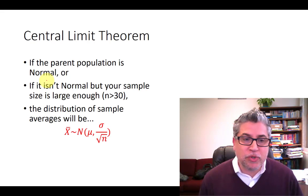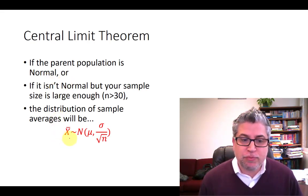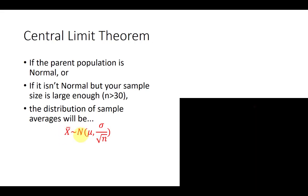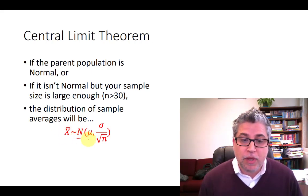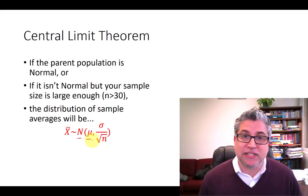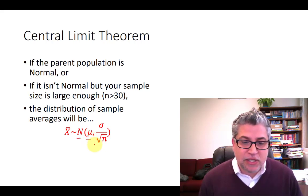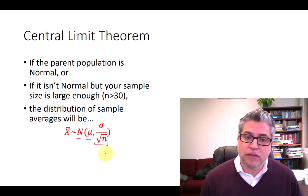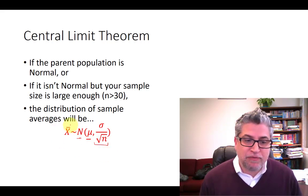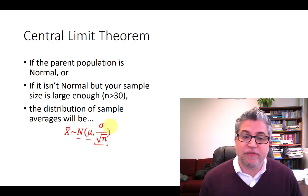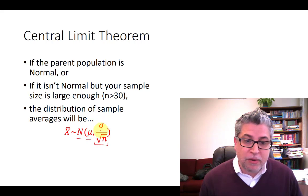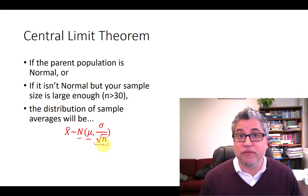Now the central limit theorem goes actually even a little bit farther. Not only does it say that the distribution of all the possible sample averages will be normal, but that it will be an unbiased estimate of the true population mean, and that it's going to be a pretty precise estimate. The range of possible values of sample averages you might get is going to have a particular standard deviation called a standard error, and it's related to the parent population standard deviation divided by the square root of the sample size.